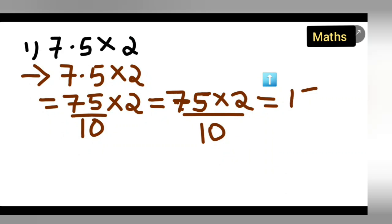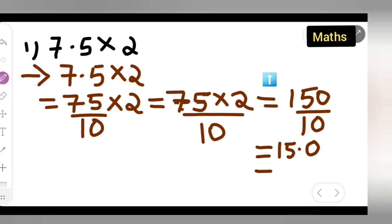So here you all can write down 150 upon 10. So the decimal point is going to come here, 15.0. Or you all can write it as... Now this you all can say it as 15 as well. So your answer will be 15.